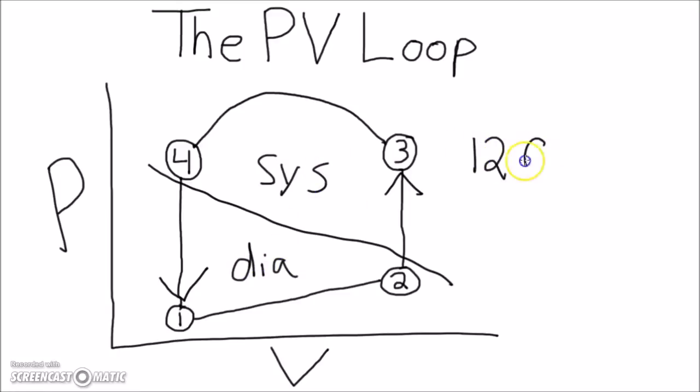This is really easy to remember because just like the normal blood pressure of 120 over 80, there is systole over diastole. Also, the systole phase is when the ventricle is contracting, so it's going to have the highest pressure.